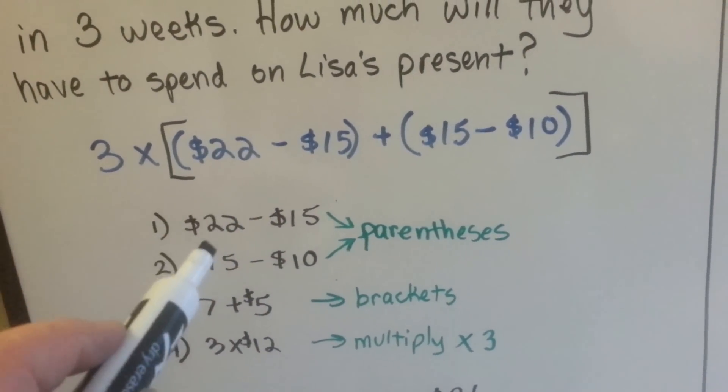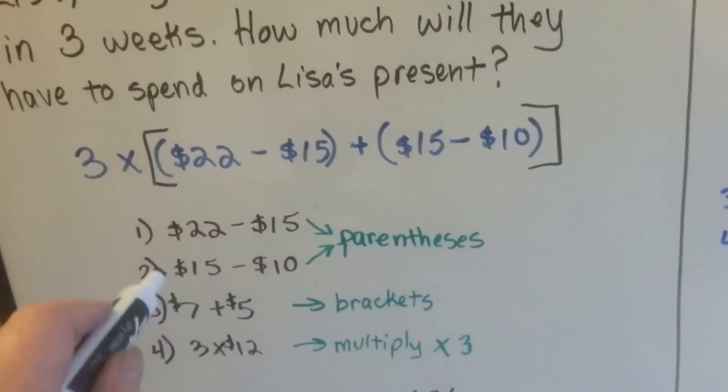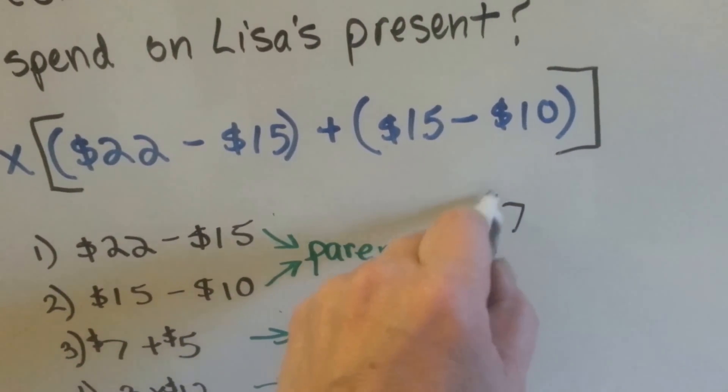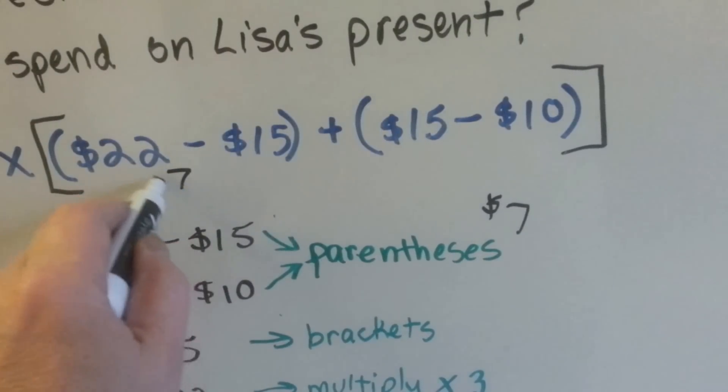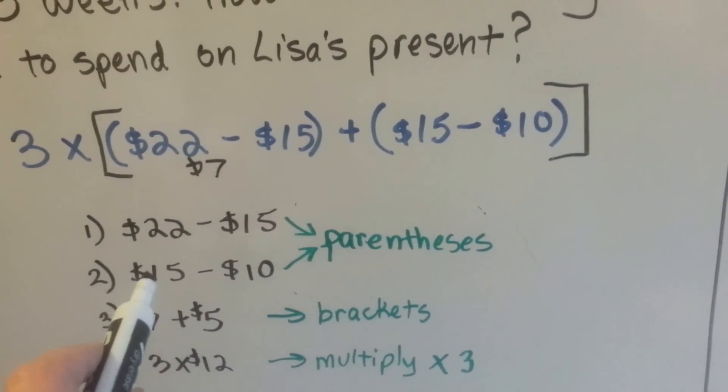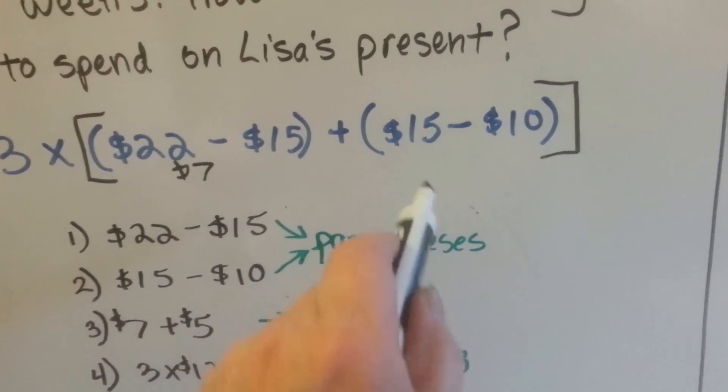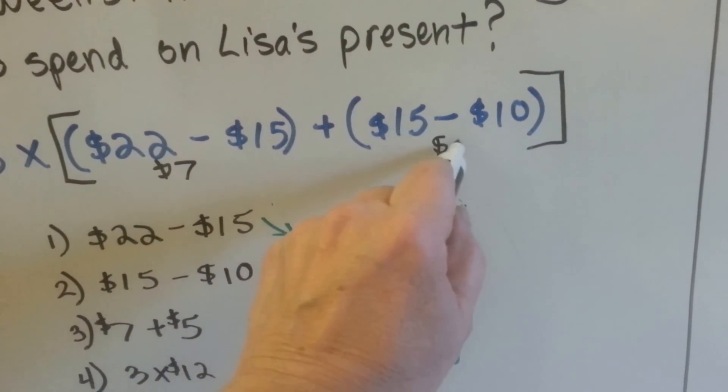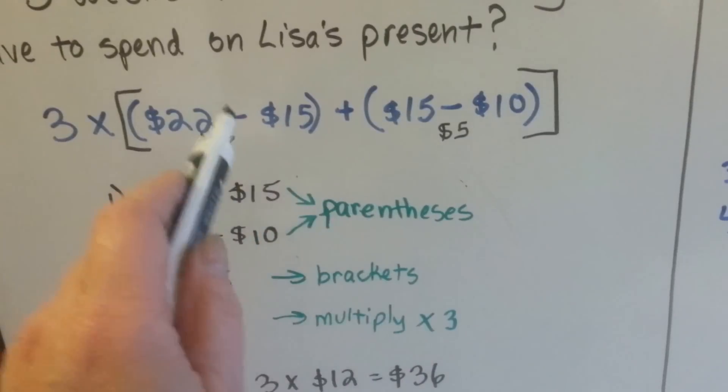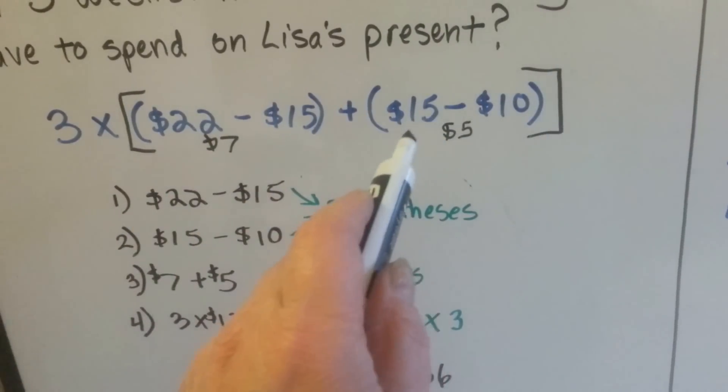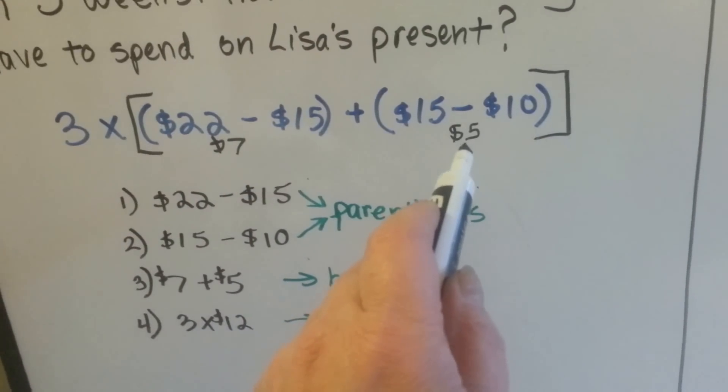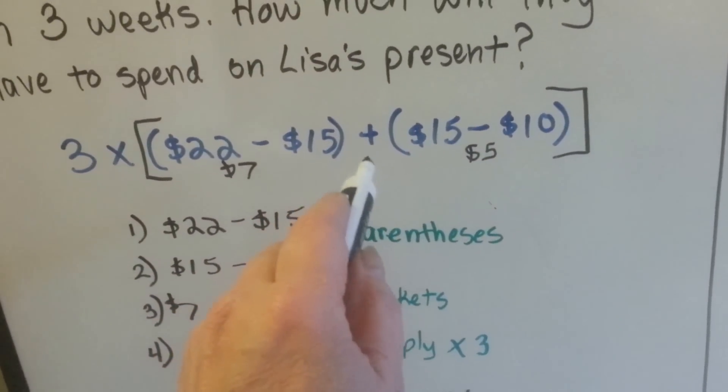We're going to do what's inside the parentheses first. We do $22 take away the $15. $22 take away $15 is $7. And then we have to do the $15 take away $10 for Tala. $15 take away $10 is $5. So now we know how much they've got left over after they've spent money on bus fare and school lunches. Emma has $7 left over and Tala has $5 left over.